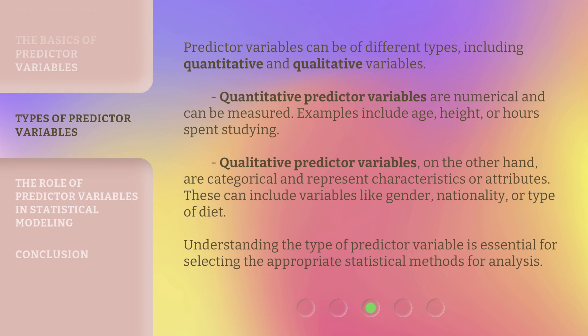Predictor variables can be of different types, including quantitative and qualitative variables. Quantitative predictor variables are numerical and can be measured — examples include age, height, or hours spent studying. Qualitative predictor variables, on the other hand, are categorical and represent characteristics or attributes. These can include variables like gender, nationality, or type of diet. Understanding the type of predictor variable is essential for selecting the appropriate statistical methods for analysis.